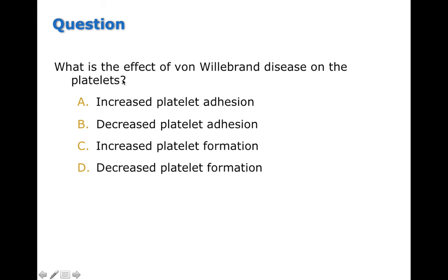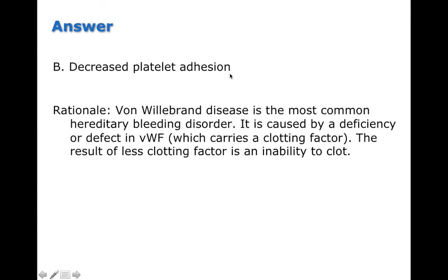What is the effect of von Willebrand disease on platelets? Von Willebrand factor is found on the outer surface of platelets and is involved in adhesion, not formation. Von Willebrand disease leads to a decrease in platelet adhesion. It is one of the more common hereditary bleeding disorders, caused by a deficiency or defect in von Willebrand factor, which also carries a clotting factor. This leads to an inability to form proper clots because platelets can't adhere to exposed collagen, making it difficult to initiate the clotting cascade.